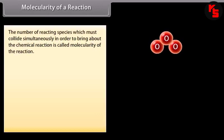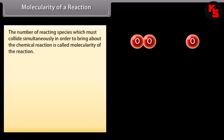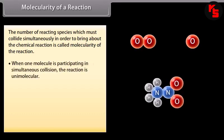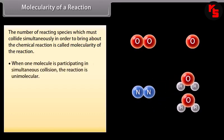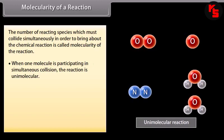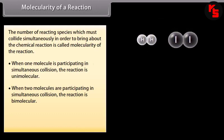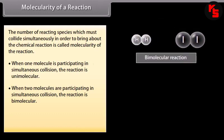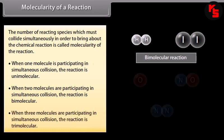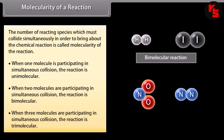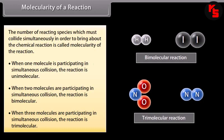Molecularity of a reaction is the number of reacting species which must collide simultaneously in order to bring about a chemical reaction. When one molecule participates in simultaneous collision, the reaction is unimolecular. When two molecules participate, the reaction is bimolecular. When three molecules participate, the reaction is trimolecular. Molecularity of a reaction is always a whole number.